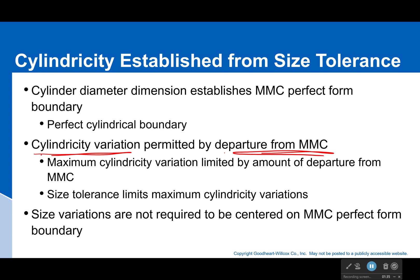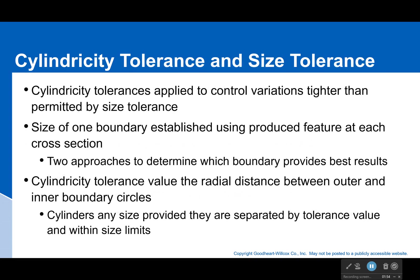So our maximum cylindricity variation is going to be limited by the amount of departure from the max material condition. Our size tolerance will limit cylindricity variations, and we would be able to limit that further as our part moves away from the max material condition by having a cylindricity tolerance applied. So we only want to add in the cylindricity tolerance if we need a greater control than is constrained by our size tolerance.